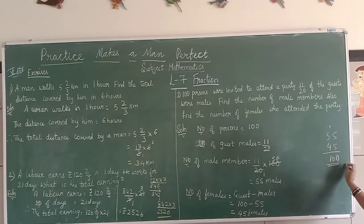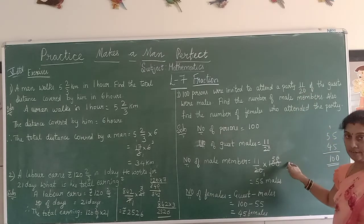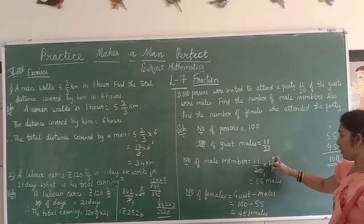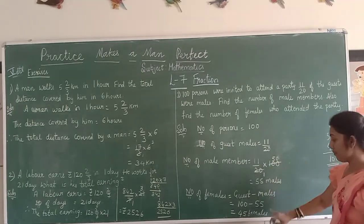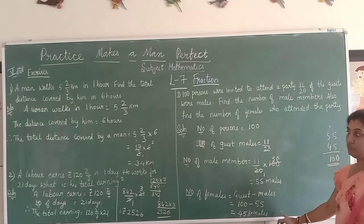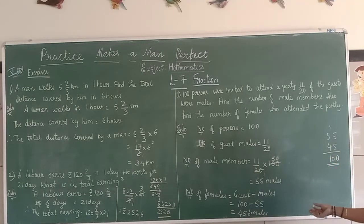So first 11/20 into 100, directly multiply to get 55 female maids. Then 100 minus 55 gives 45 males. Next class I will continue with your next topic. Thank you.